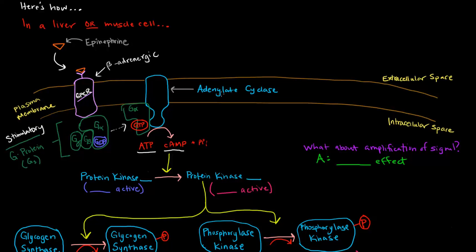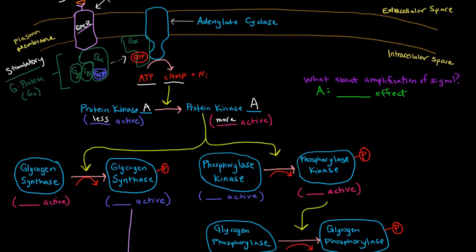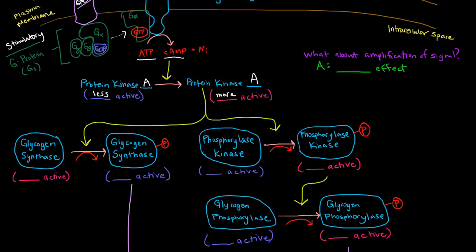The GTP-bound alpha subunit of the G-protein heads over to adenylate cyclase. Adenylate cyclase makes cyclic AMP from ATP. These cyclic AMPs activate cyclic AMP-dependent protein kinases — in the case of epinephrine, that protein kinase specifically is protein kinase A. Protein kinase A goes from a less active state to a more active state, and it will go on to add phosphate groups to certain proteins.